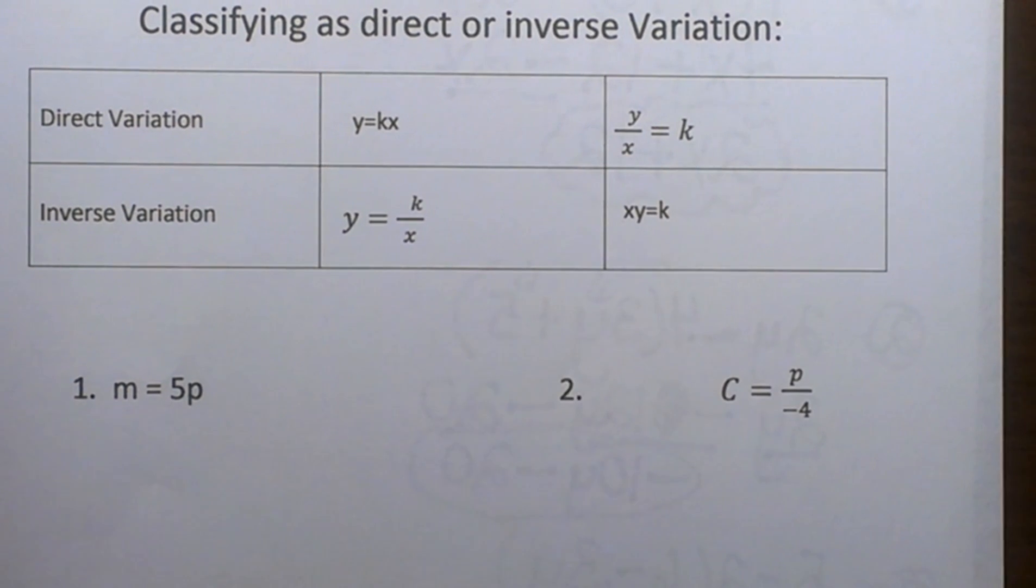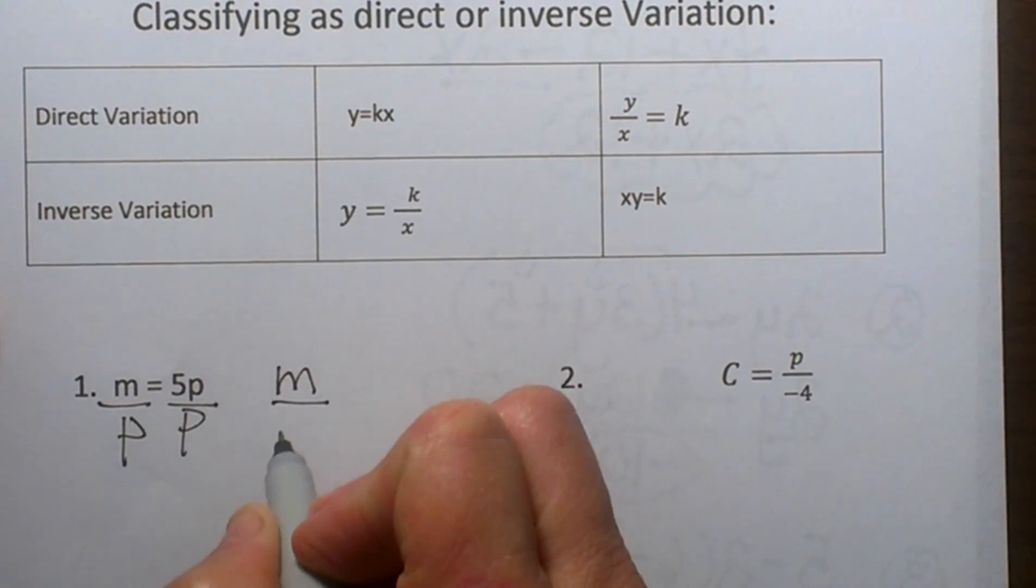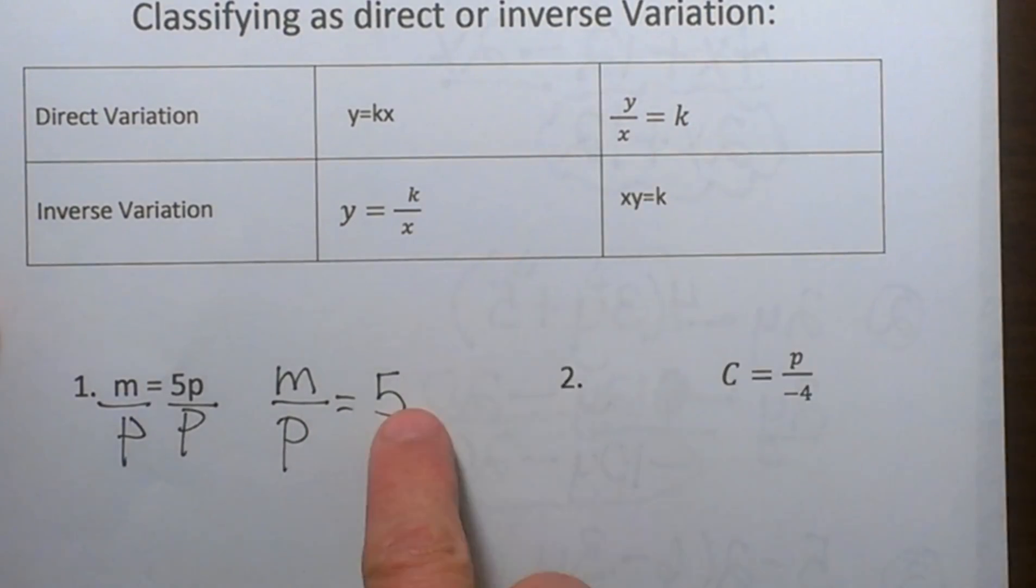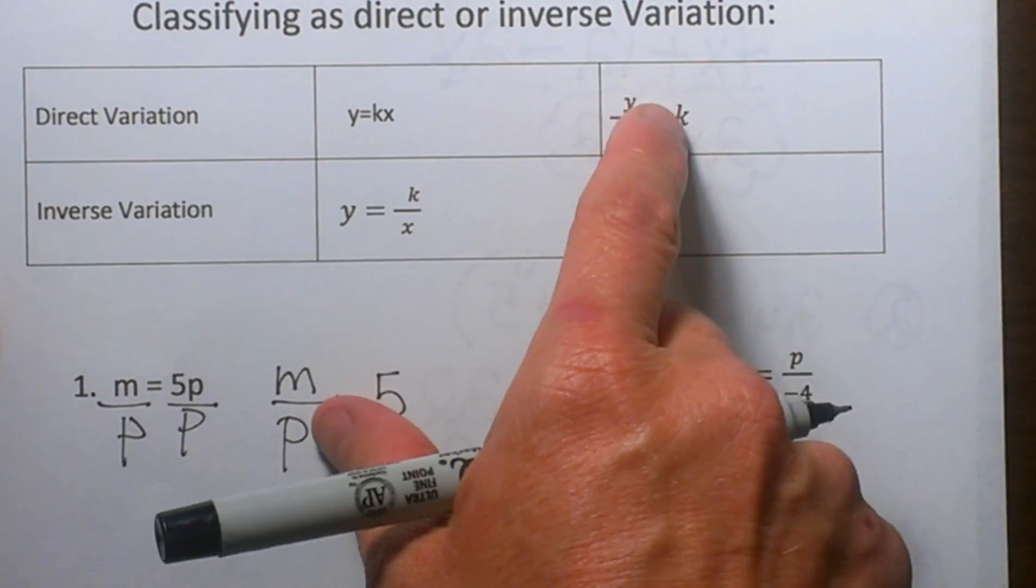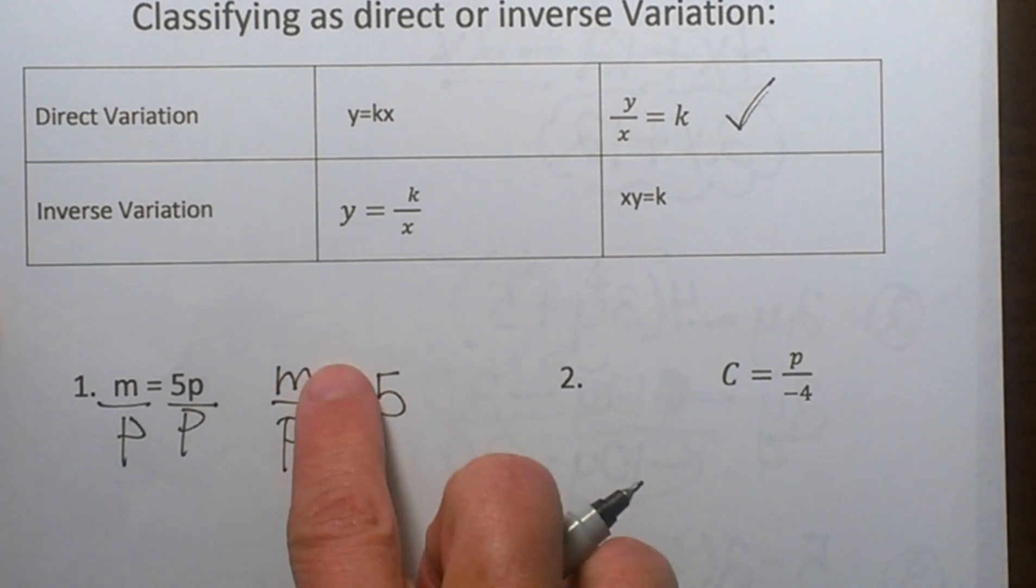So I'm going to divide both sides by p and that gives me m over p is equal to the constant 5 where k is 5, and yes that is what it looks like. I like to get my variables on the same side and yes that confirms that one definitely is a direct variation. So as one variable increases the other one increases.